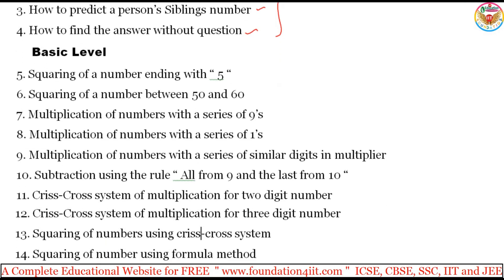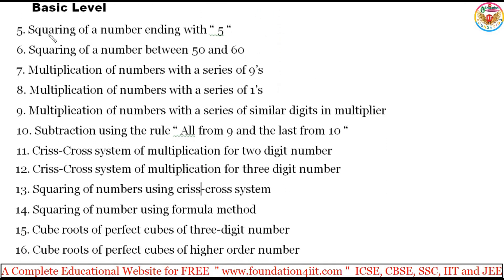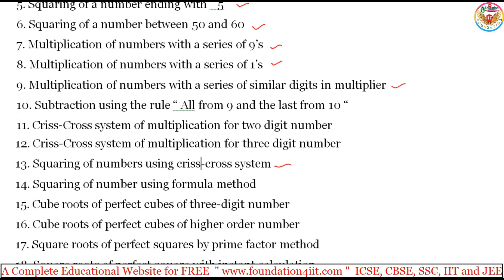Now when you come to the basic level, here are the videos I will make: squaring of a number ending with 5, squaring the number between 50 and 60, multiplication of numbers with a series of 9s and 1s, multiplication of numbers with series of similar digits in the multiplier, subtracting using the rule 'all from 9 and last from 10', criss-cross system of multiplications for 2 and 3 digit numbers, and squaring up a number using the criss-cross system.